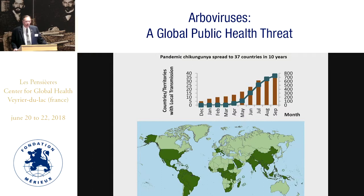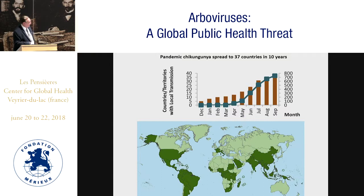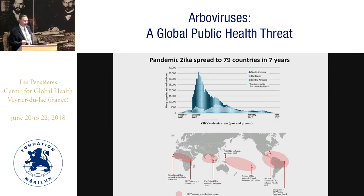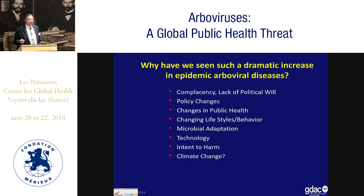It took dengue 30 years to spread globally; it took chikungunya about 10 years to do the same — following right in the path of dengue viruses. This top graph shows the epidemic curve for chikungunya when it was introduced into the American region in 2014. We saw the same pattern again with Zika virus, which followed in the path of chikungunya and dengue but only took seven years to spread around the world. There's a clear trend occurring, probably associated with the global trends I'm about to discuss.